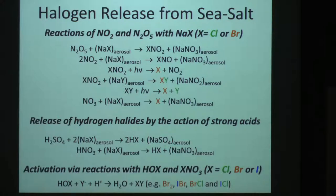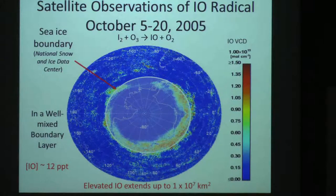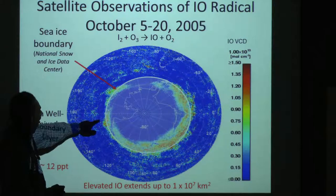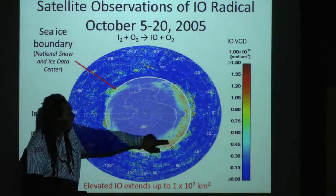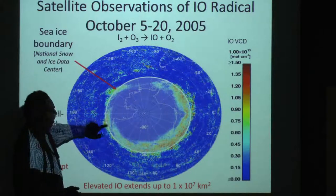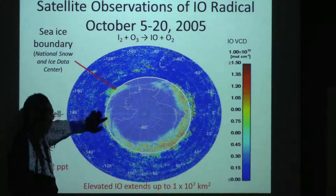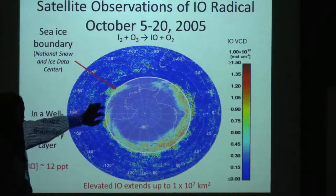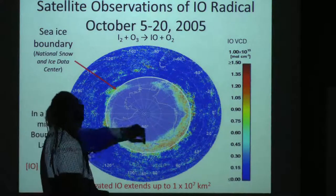So where is it going to come from? This image is a satellite image taken by Sciamachy, which is a satellite. People use it for various things, but primarily some people use it for halogens. If you look at this plot, it shows a lot of red over here — IO — and that's high in concentration.